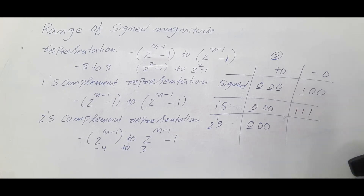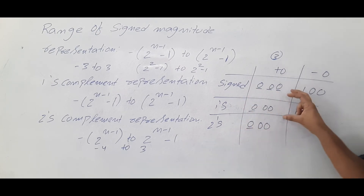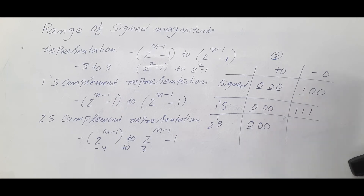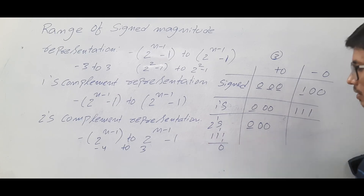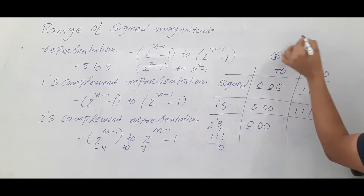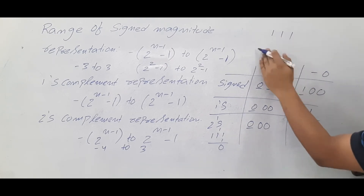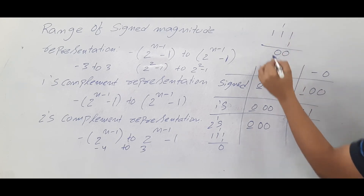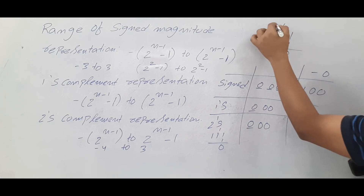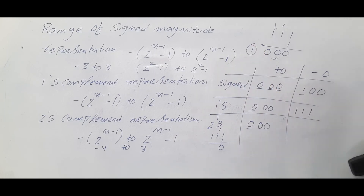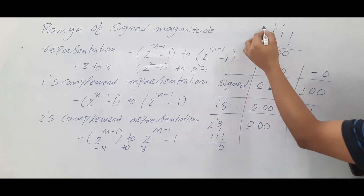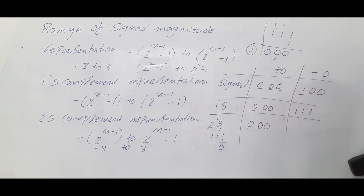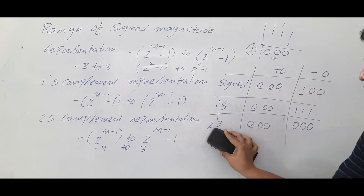For two's complement, plus 0 is 000. To find the two's complement of minus 0, we take the one's complement of 000, which is 111, then add 1. Adding 1 to 111: each column gives sum 0 with carry 1, propagating through all three bits, resulting in a carry out. With only 3 bits, this carry is lost — it's an overflow condition. So minus 0 in two's complement is also 000.